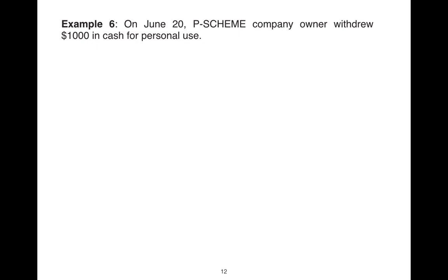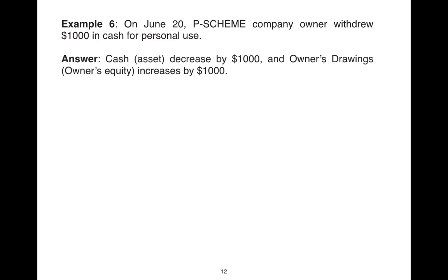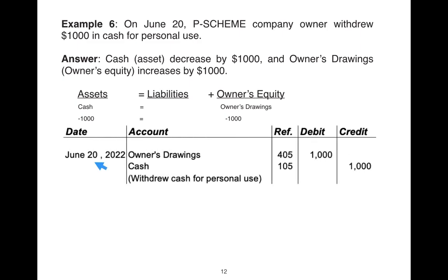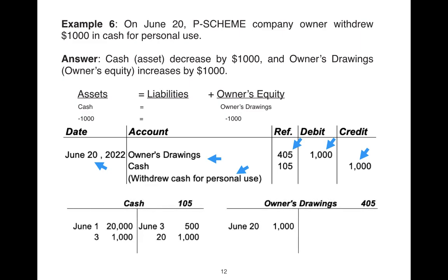In example six, the owner withdrew $1,000 US dollar in cash for personal use. We have a decrease in cash by $1,000 and an increase in owners drawing by the same amount — minus $1,000 on both sides of the accounting equation. Our journal entry shows debit owners drawing and credit cash. The T-account posting shows the date and amount on the debit side for owners drawing and on the credit side for cash, in addition to amounts of $20,000, $1,000, and $500 from examples 1, 3, and 4.